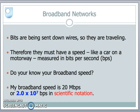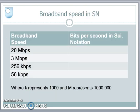Mine is 20 megabits per second, or in scientific notation, 2.0 times 10 to the power of 7. Here are several broadband speeds. For 20 megabits per second, I want to convert to bits per second and represent the answer in scientific notation. 20 mega is 20 times a million, which is 10 to the power of 6. Because I want it in scientific notation, I convert 20 to 2.0 and add 1 to the power of 10.